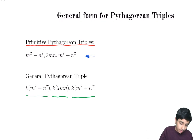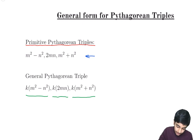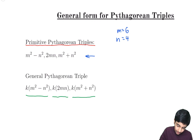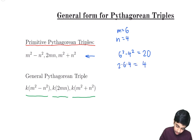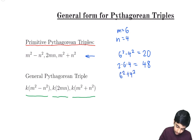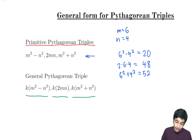For example, for the Pythagorean triple 20, 48, 52, if m equals 6 and n equals 4, we have 6 squared minus 4 squared equals 20, 2 times 6 times 4 equals 48, and m squared plus n squared — 6 squared plus 4 squared — equals 52. And as you can see, this satisfies a Pythagorean triple.